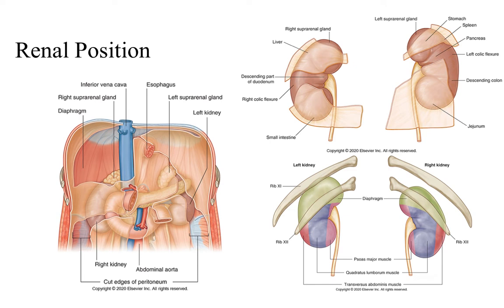Some more notes about renal position. The kidneys are retroperitoneal, so they are behind the parietal peritoneum on the posterior abdominal wall. When we say they're against the posterior abdominal wall, we mean they are against the muscles of the posterior abdominal wall.